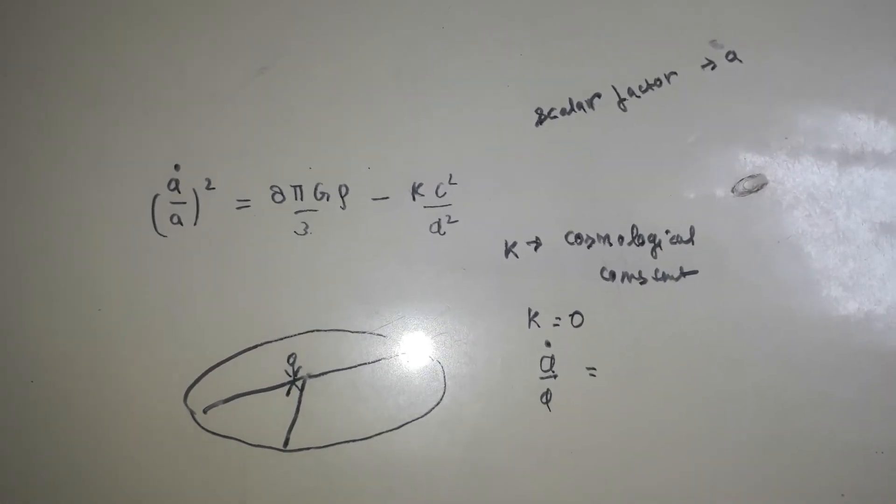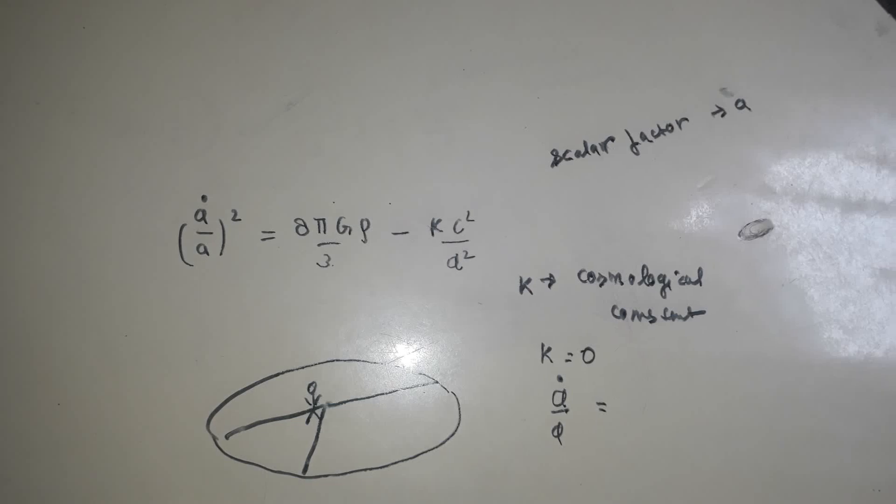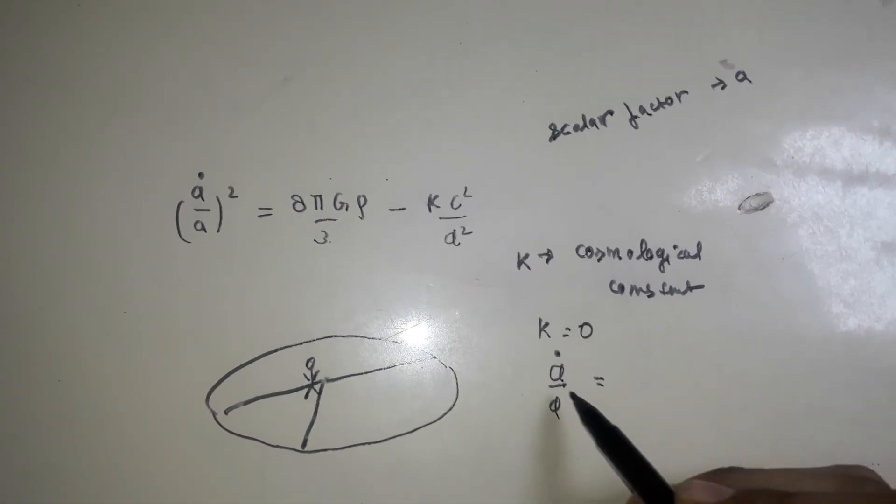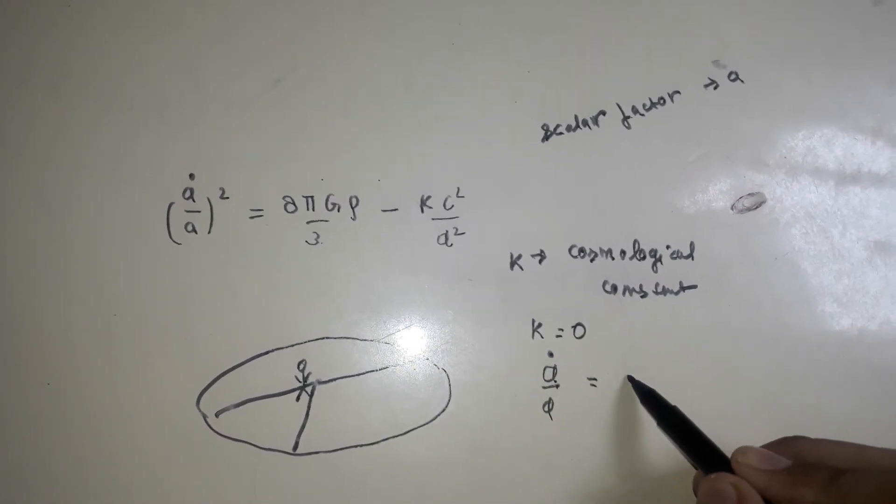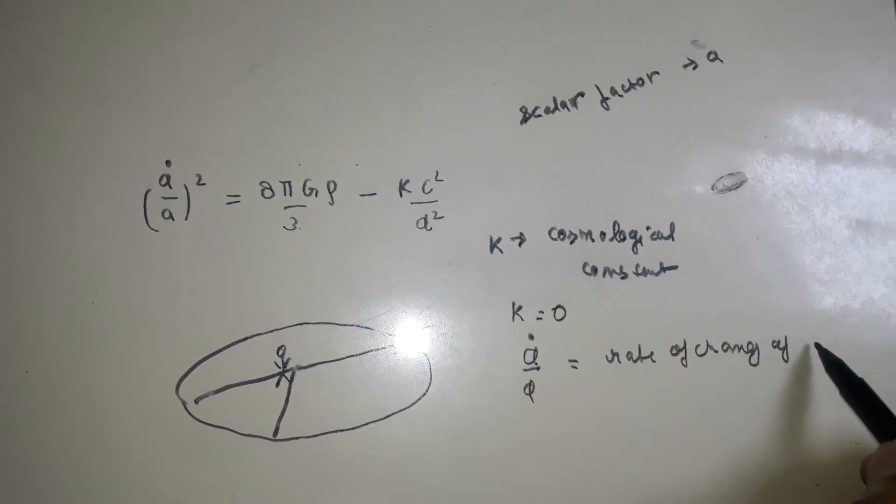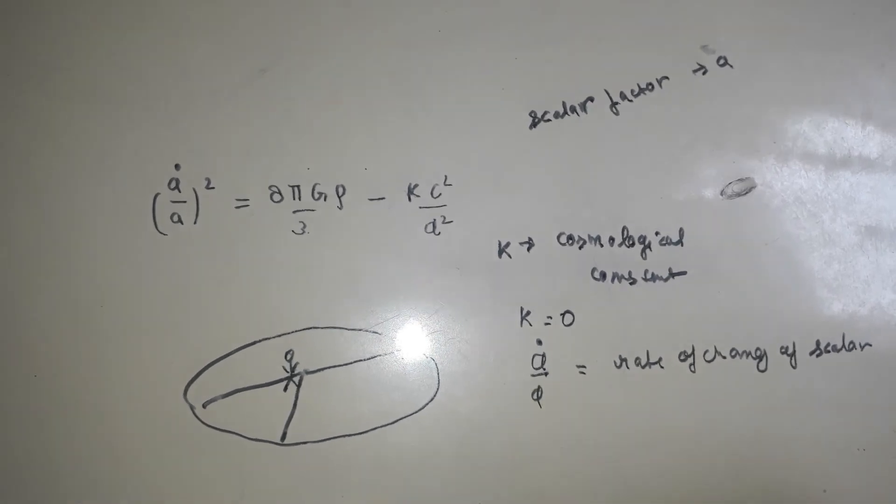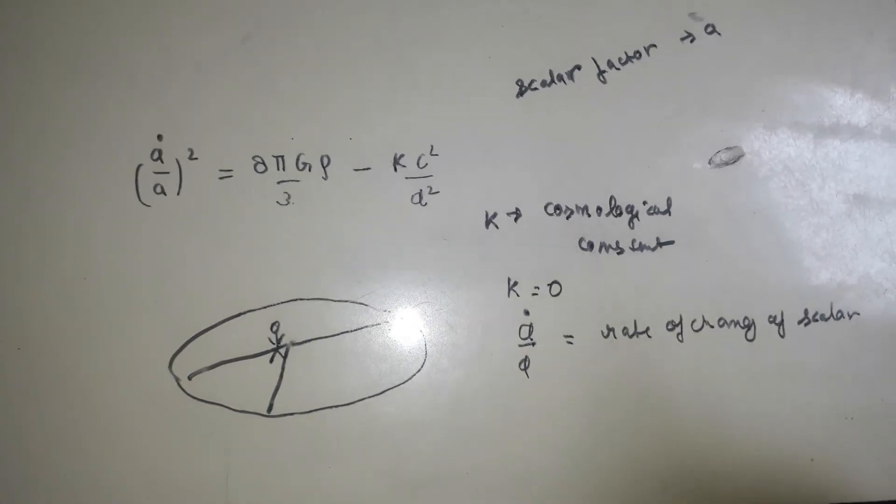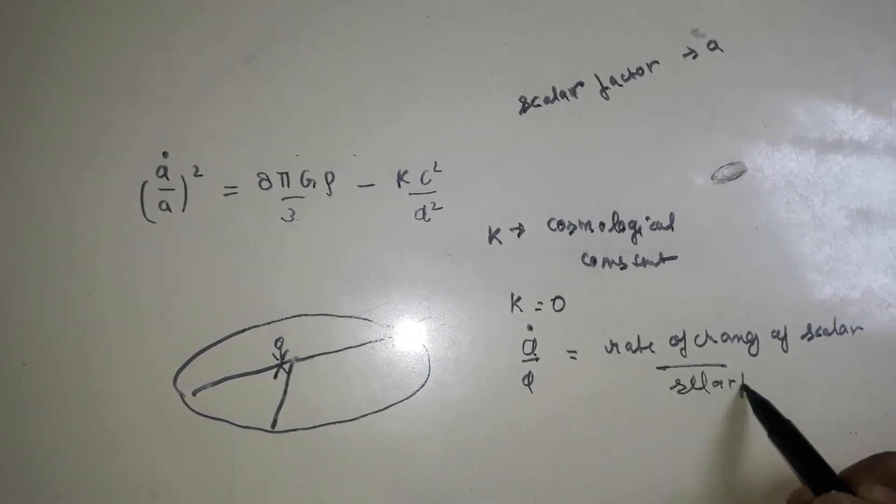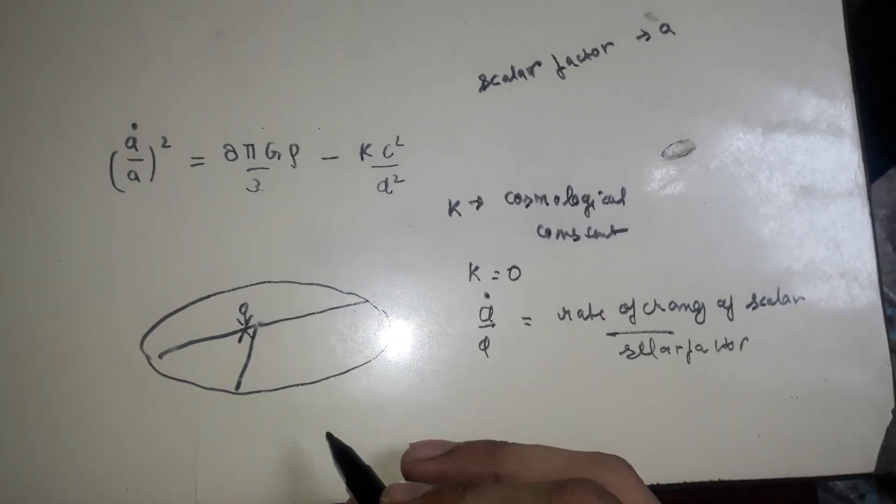Scalar factor is something really interesting, we will tell further what is scalar factor. So now this A dot means the rate of change of scalar factor. The rate of change of scalar factor means that A is dependent on time, it changes with time. And this A is scalar factor.